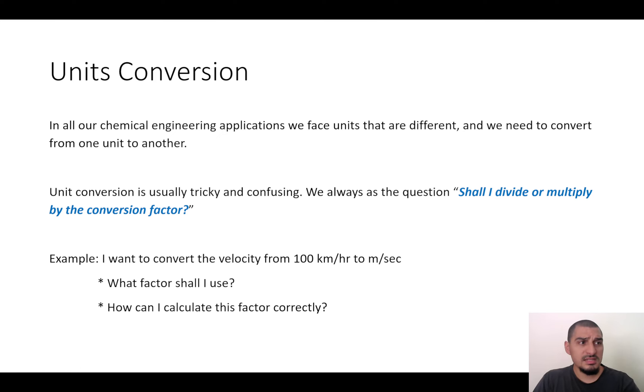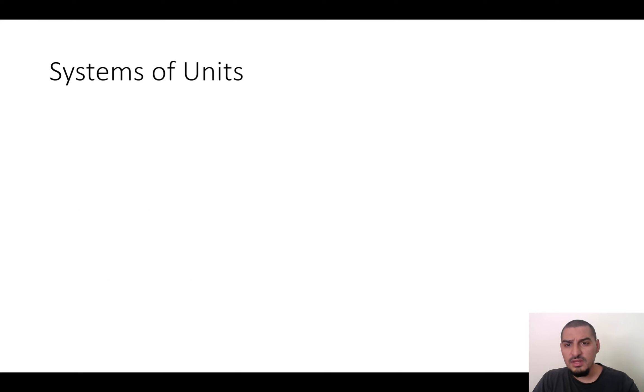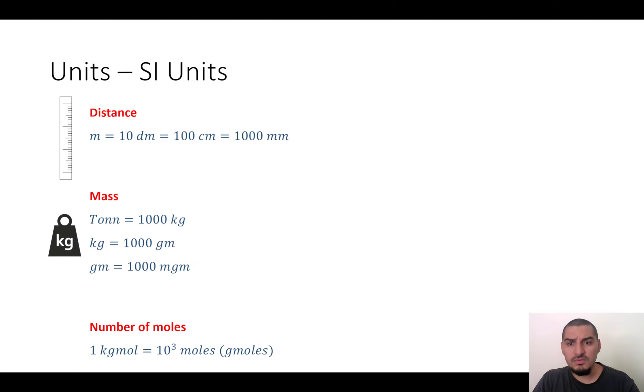So the first is what factor shall I use and shall I divide or multiply by the factor or how can I calculate this factor correctly? And since this is a very tricky thing, we will go through a very systematic way to do this. But before that, we need to know the conversion factors. What are the factors that we can use to do the conversion? We have already gone through some of them when we talked about the systems of units, and here we had some conversions for the SI units, but this was from SI to SI.